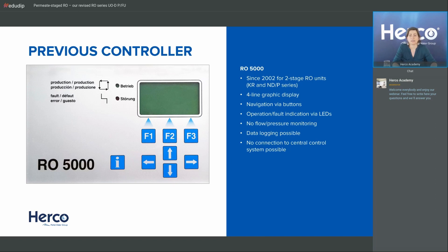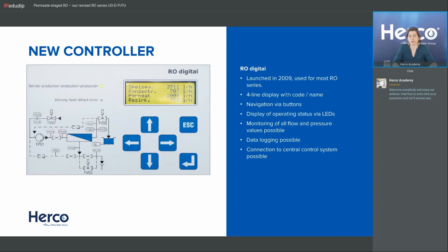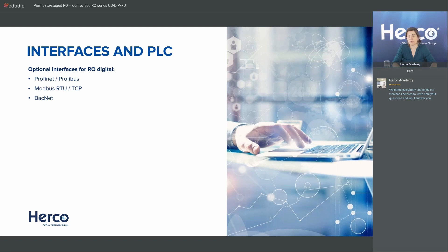With the old controller, we had some data logging but couldn't monitor or log flows and pressures — whatever warnings or logging we had was very limited. There was also no connection to any central control system. With the RO Digital, you can monitor all flow and pressure values, log the data, and — if you choose an interface — connect to a central control system.